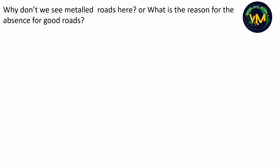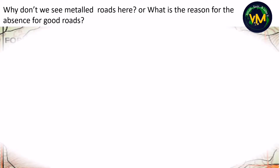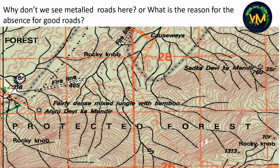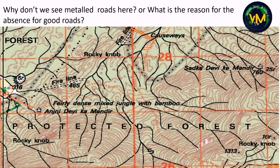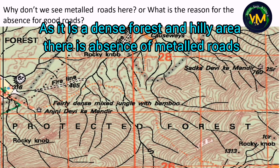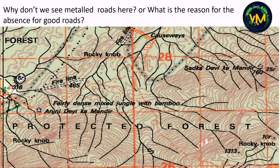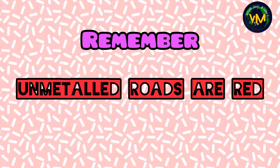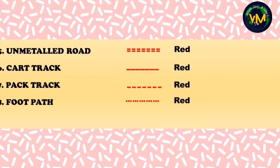There is a board exam question: why don't we see metal roads here, or what is the reason for the absence of good roads in this part of the map? The answer: contour lines represent it is a hilly area; it is also written as protected forest and fairly dense mixed jungle with bamboo. Since it is a dense forest and a hilly area, we don't see metal roads or good roads here. Remember — all unmetalled roads, starting from cart track, pack track and footpath, everything is red in color.